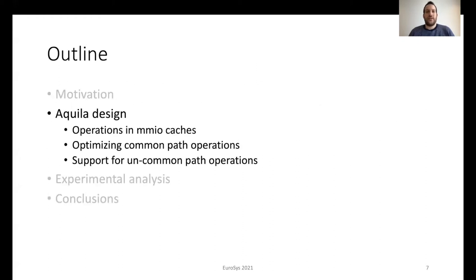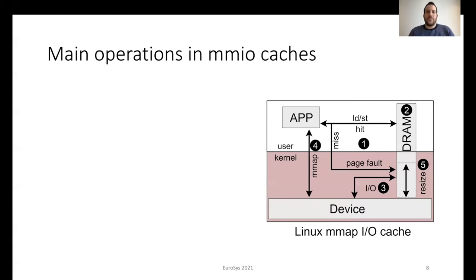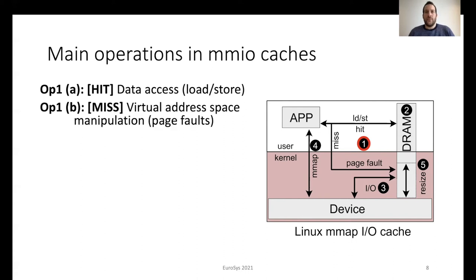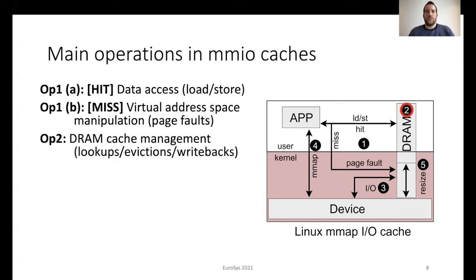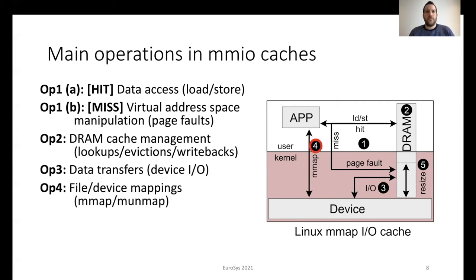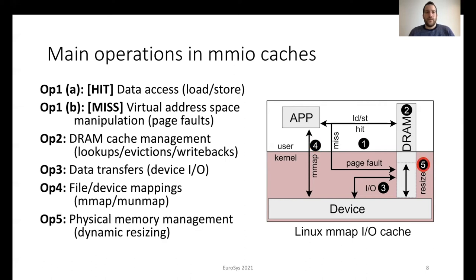We observe that cache management with memory-mapped I/O requires several distinct operations. The first operation, during the hit path, uses load/store instructions that are handled entirely in hardware through the memory management unit, resulting in no software overheads. The miss path requires virtual address space manipulation, which also includes page faults. The second operation includes DRAM cache management in the case of a miss: checking if the page already exists in memory and also handling evictions and writebacks. The third operation includes data transfers between the device and DRAM. The fourth operation is a management operation — in memory-mapped I/O, it includes file or device mappings handled by mmap and munmap. The last operation is physical memory management, which includes the dynamic resizing of the DRAM cache.